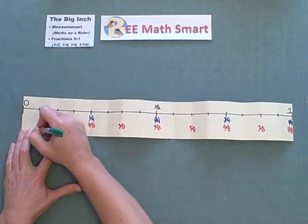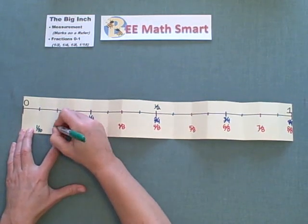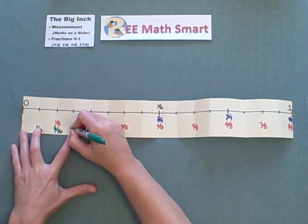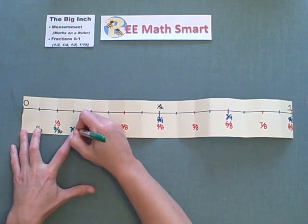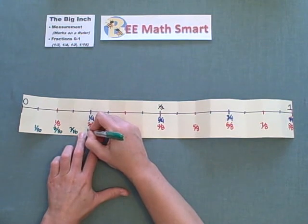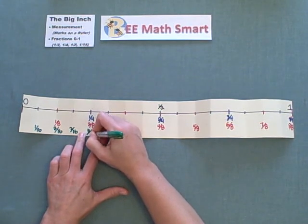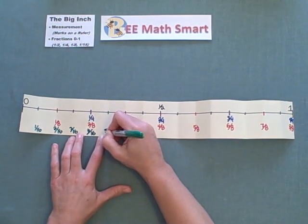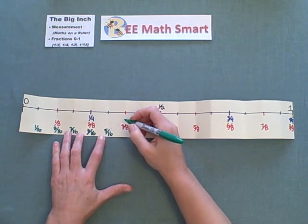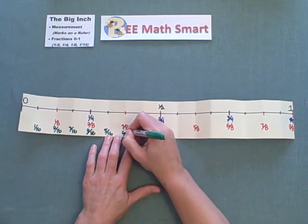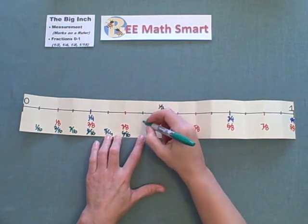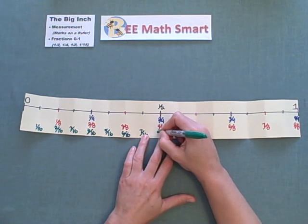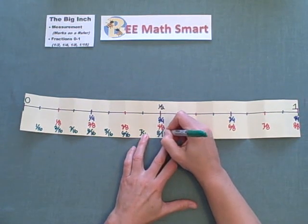Okay, I have one sixteenth, two sixteenths which you can see equals one eighth, three sixteenths, four sixteenths equals one fourth. And if you think about that, four is one fourth of sixteen. Five sixteenths, six sixteenths equals three eighths, seven sixteenths, and eight sixteenths. Eight is in fact half of sixteen, so it is equal to half.